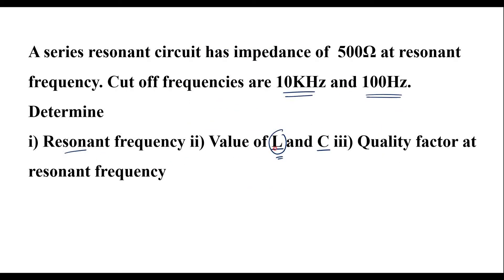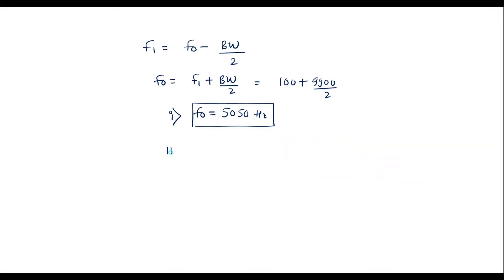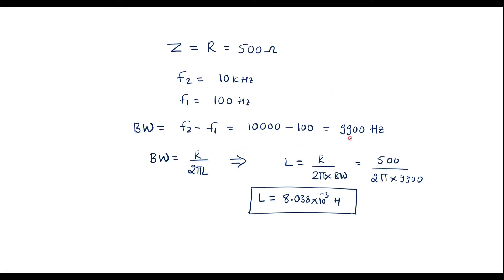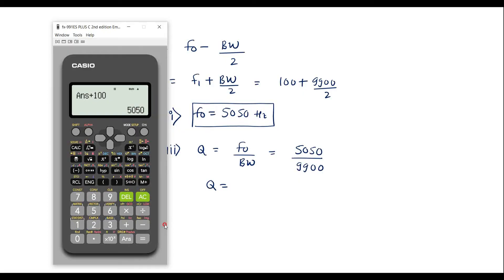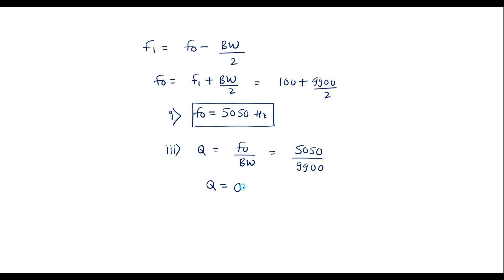Now I will calculate the quality factor. We know that quality factor Q is equal to F0 divided by bandwidth. So F0 is 5,050 divided by bandwidth 9,900. Therefore Q is equal to 5,050 divided by 9,900, which gives 0.510. So this is the quality factor.